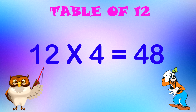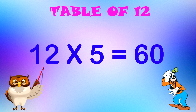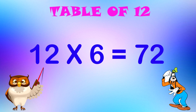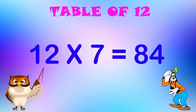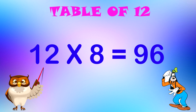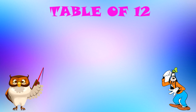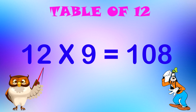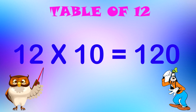12 multiplied by 4 equal to 48. 12 multiplied by 5 equal to 60. 12 multiplied by 6 equal to 72. 12 multiplied by 7 equal to 84. 12 multiplied by 8 equal to 96. 12 multiplied by 9 equal to 108. 12 multiplied by 10 equal to 120.